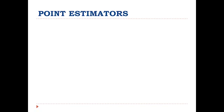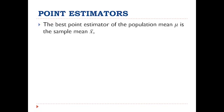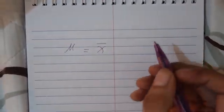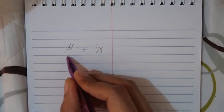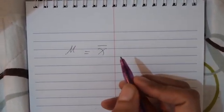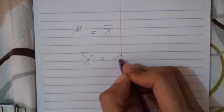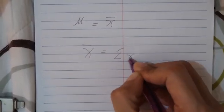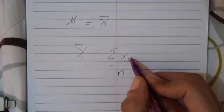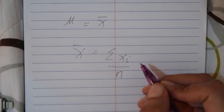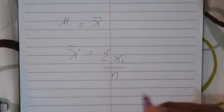For estimation of a population there are two important things: the point estimator and the interval estimator. The best point estimator of the population mean mu is the sample mean, which is calculated as the summation of x-sub-i over n, where i runs from 1 to n.